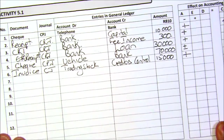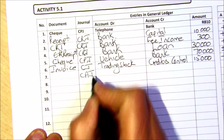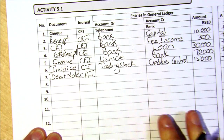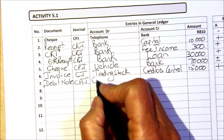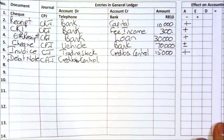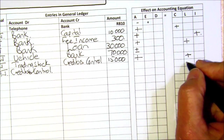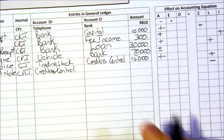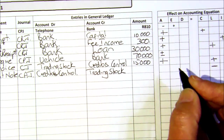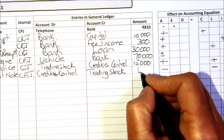On the seventh, you return goods. If something was recorded in the creditors' journal, when you return it, it goes to the creditors' allowances journal, and you use a debit note. We debit our creditors' control — the creditors are our liability, and we're decreasing them. When you decrease a liability, you debit, so your liability is going down. You're returning trading stock, which was an asset, so your asset is going down. The return was for 400 rand.